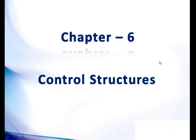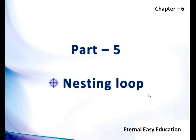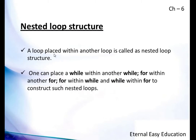Hello students, in this session you are going to learn Chapter 6: Control Structures. In this video you are going to learn what is a nesting loop. A loop placed within another loop is called a nested loop structure. One can place a while within another while, for within another for, for within while, and while within for — meaning we can combine any looping structures with one another. If a loop is present inside another loop, it is said to be a nested loop.